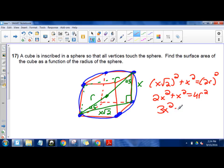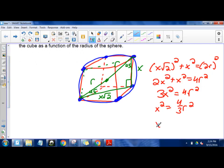We're just trying to get X in terms of R. So let's see, this would be X squared equals 4 thirds R squared and X is equal to 2 over root 3 R.